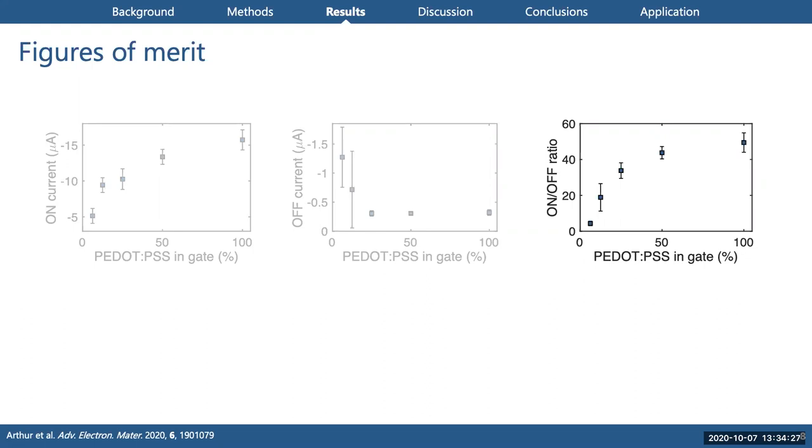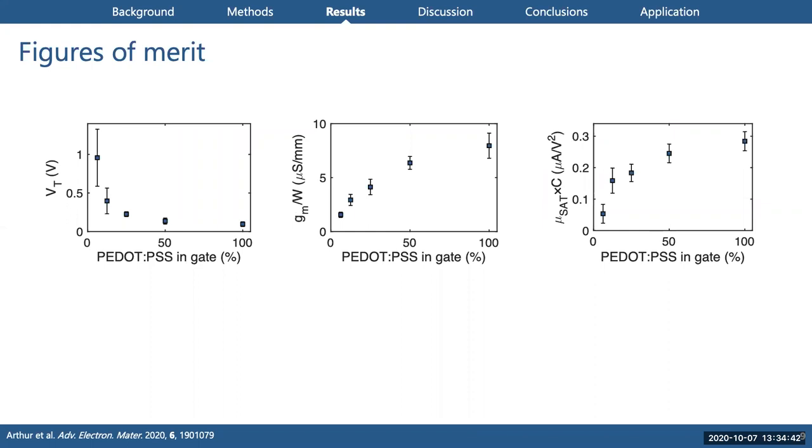The off current is actually quite constant. It doesn't change much until we get to very poorly conducting gates. This is likely an artifact of the limited gate voltage range that we sweep for the transfer curve. At very low gate conductance, we don't actually reach the off state within this range of gate voltages. Of course, the on-off ratio here is simply reflecting both sets of data.